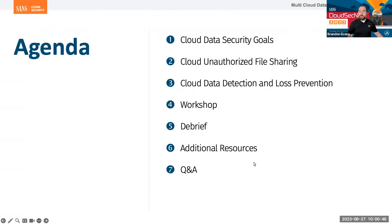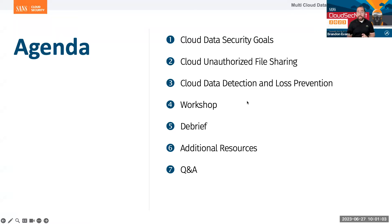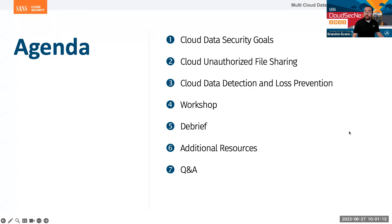Here's the agenda for today. We're going to talk about cloud data security goals — the things we're trying to accomplish when we want to ensure data security in the cloud. Then we're going to talk about unauthorized file sharing, as well as cloud data detection and loss prevention. Then we'll have the workshop where we play around with both of those components, followed by a debrief, additional resources, and Q&A.